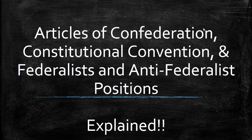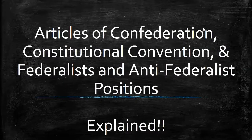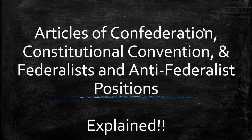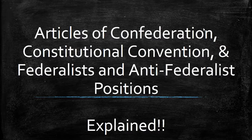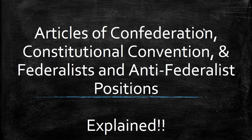Today we're going to cover a couple of topics that are all linked together. We're going to start with America's first attempt at a national government, the Articles of Confederation. That government will encounter a lot of problems, so a convention is held to draft a new government under a constitution. Many important topics are debated at the convention. Finally, the Constitution is sent out to states for ratification, and while that process is going on, two camps emerge — one in support of the Constitution and one against — who will write numerous essays in newspapers detailing their arguments.